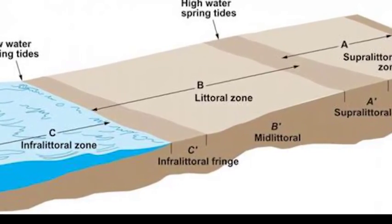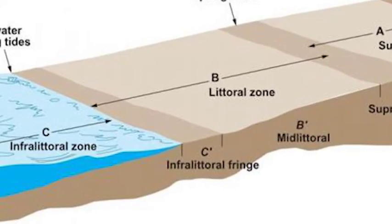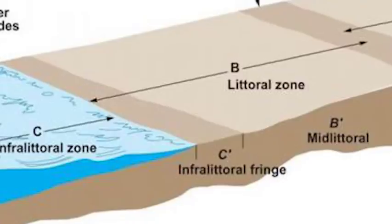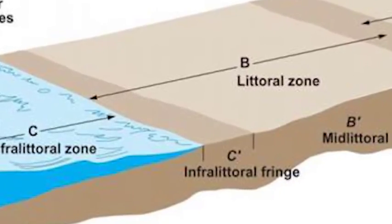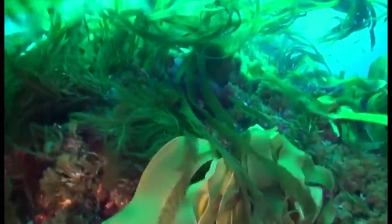The lowest part of the litoral zone, uncovered only at the spring tides and not even then if wave action is strong, is the infralitoral fringe. This zone, exposed for short periods of time, consists of forests of large brown algae, Laminaria, one of the kelps, with the rich undergrowth of smaller plants and animals among the holdfast.